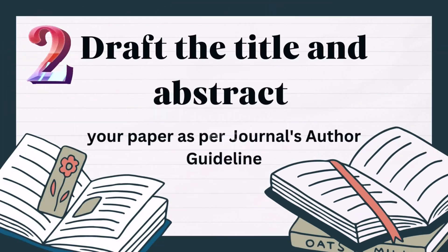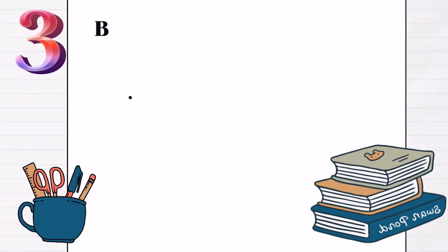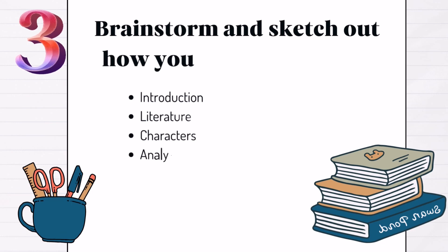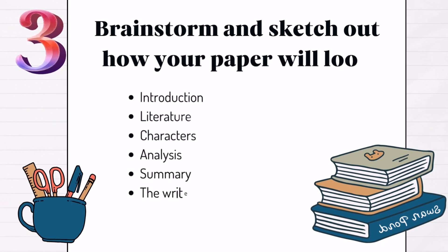Step 2: Draft the title and abstract of your paper as per the journal's author guidelines. Step 3: Brainstorm and sketch out how your paper will look. Your personal preference will steer you towards creating an outline with words, pictures, or colors.